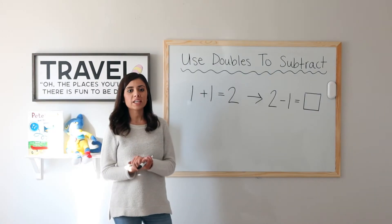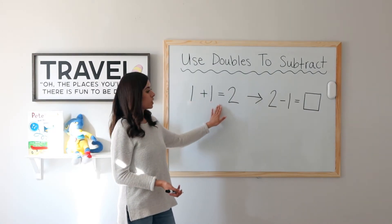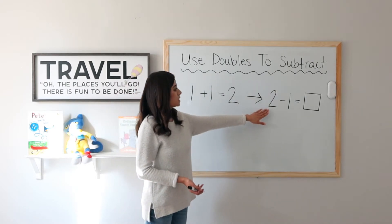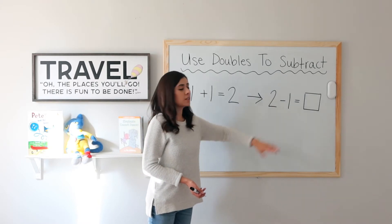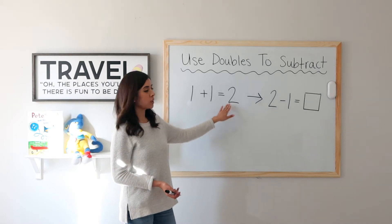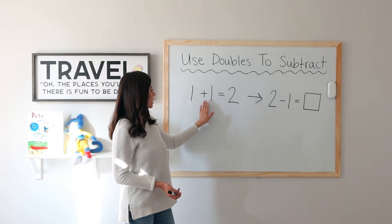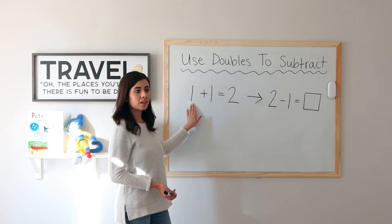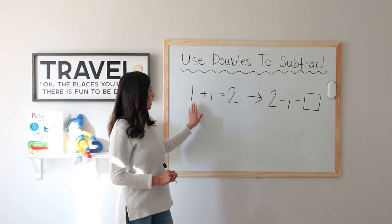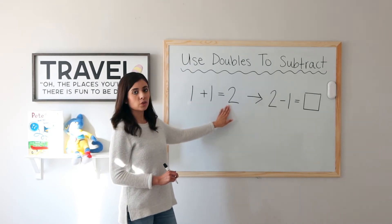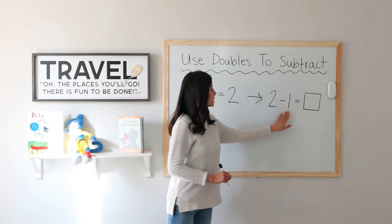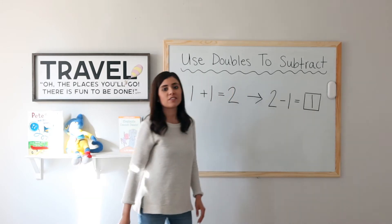Let's go ahead and take a look at an example. 1 plus 1 equals 2. Did you know that this doubles fact can help me find the subtraction problem 2 minus 1? Watch this. 1 plus 1 equals 2, so 2 minus 1 equals 1. If I read this backwards as a subtraction problem, I can find my answer.